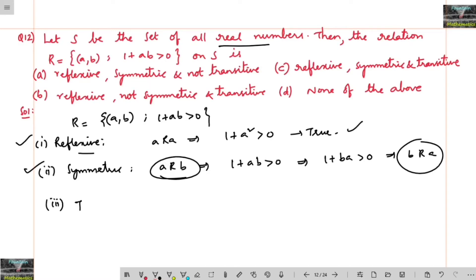And coming to the transitive one, many students will have confusion in this. They will go with the same explanation: if a is related to b implies 1 plus ab is greater than 0, and b is related to c so that 1 plus bc is greater than 0. And by solving this, we can say a is related to c since 1 plus ac is also greater than 0. This is a wrong assumption.